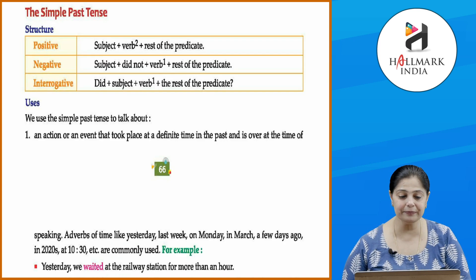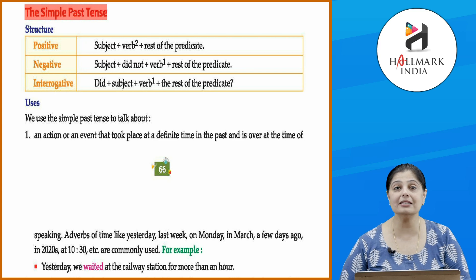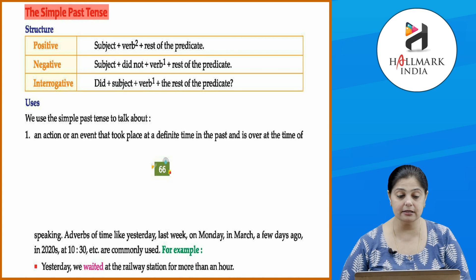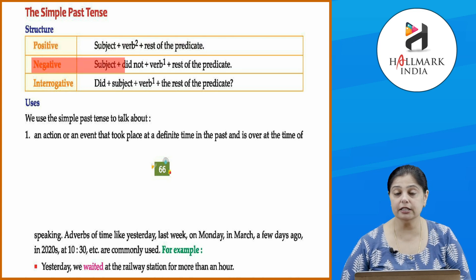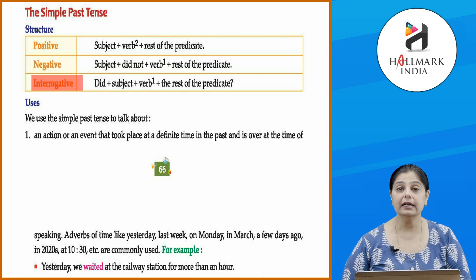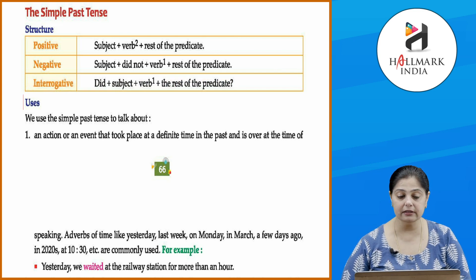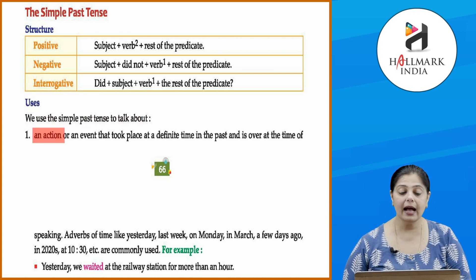We have finished with the present tense. Now let's talk about the past tense. Simple past tense — positive: subject plus verb 2 plus rest of the predicate. Negative: subject plus did not plus verb 1 plus rest of the predicate. We use the simple past tense to talk about an action or event that took place at a definite time in the past and is over at the time of speaking.